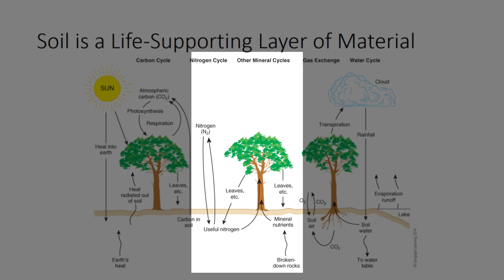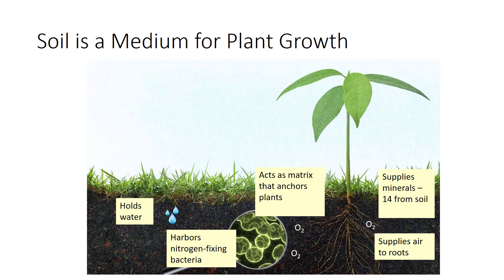Plant nutrients also cycle through the soil via the nitrogen and other mineral cycles. Nitrogen comes from the atmosphere as a gas and is converted by soil organisms to forms that plants can use. Other nutrients are released from rocks in the Earth's crust when rocks are broken down by weather, plants, and other factors. An individual plant depends on soil for four needs: anchorage, water, oxygen, and nutrients.